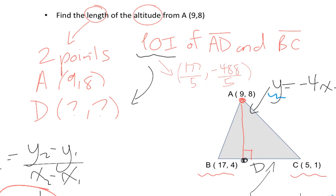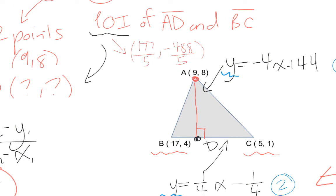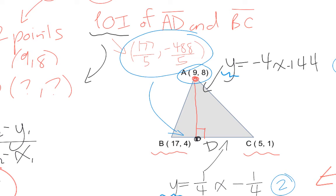We are finally ready to figure out the length of the altitude. We already know what coordinate A is, and we've just figured out what the coordinate of D is. Because we have these two coordinates, you can plug them into the length of a line segment equation to figure out the length of the altitude. The actual calculations aren't that important — it's the overall strategy that we're learning.